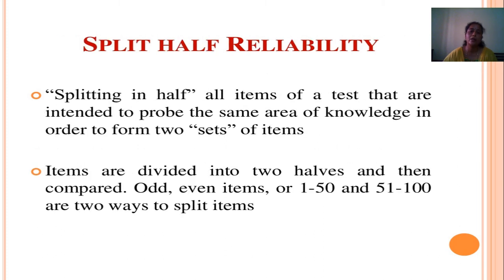Split-Half Reliability takes all items of a test intended to cover the same area of knowledge and divides them into two sets. The items are divided into two halves and then compared — for example, items 1 to 50 versus items 51 to 100, or split in two other ways.